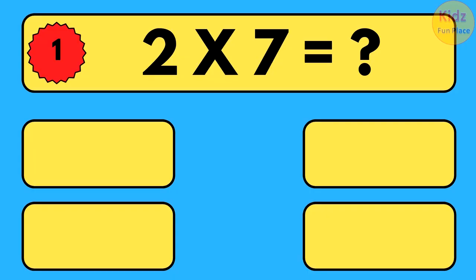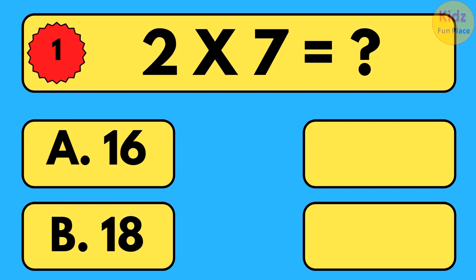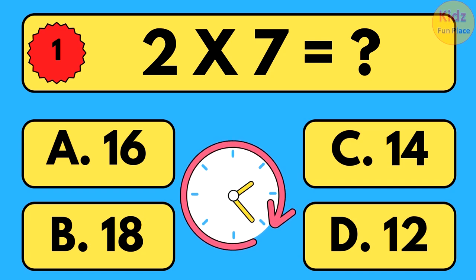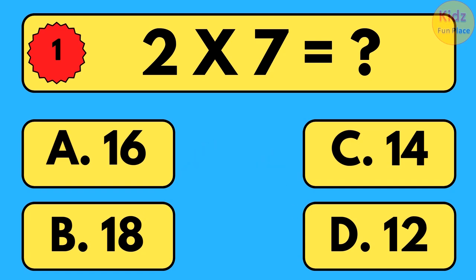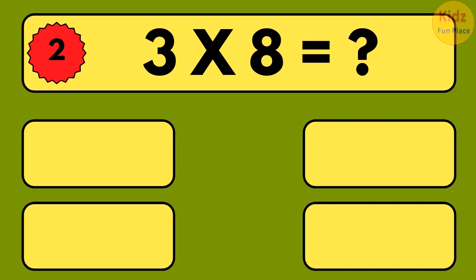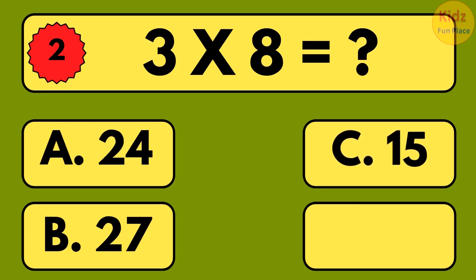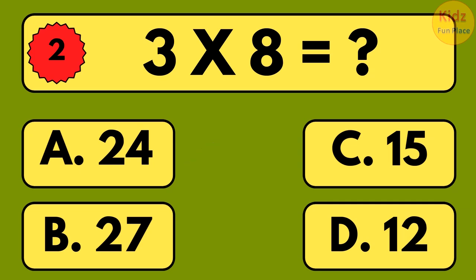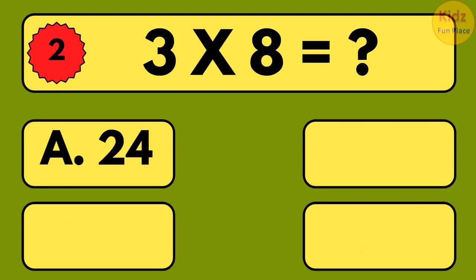2 times 7 is equal to what? 2 times 7 is equal to 14. 3 times 8 is equal to what? 3 times 8 is equal to 24.